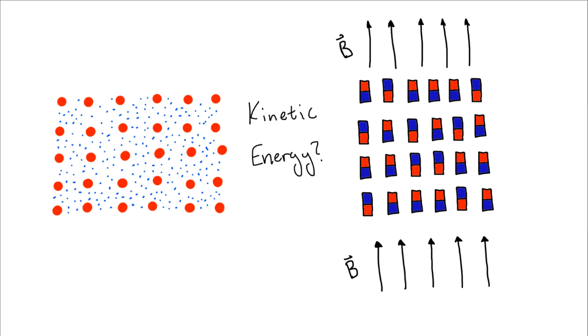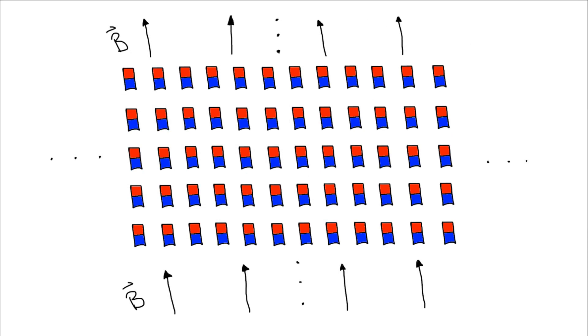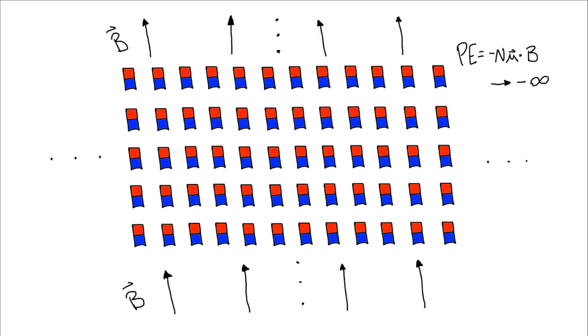For example, if we have an infinite number of magnetic dipoles in a magnetic field, all of which are aligned with the field, the potential energy of the system is going to be negative infinity since each dipole has a finite negative potential energy. Other forms of potential energy, like gravitational, require some reference point for them to make sense. In either case, it makes much more sense to talk about changes in potential energy rather than the quantity itself.